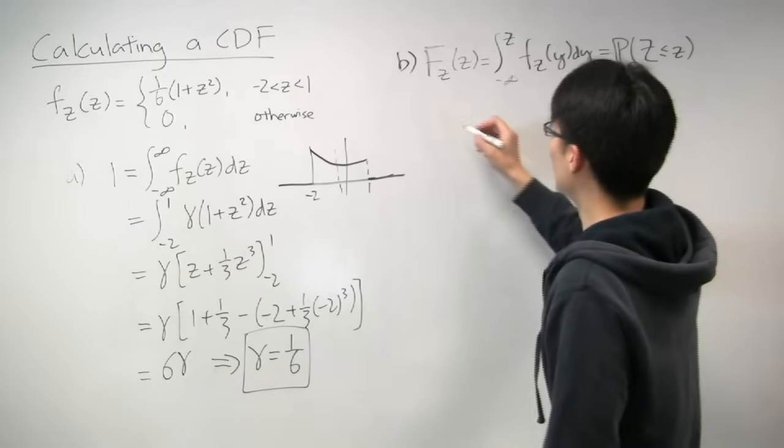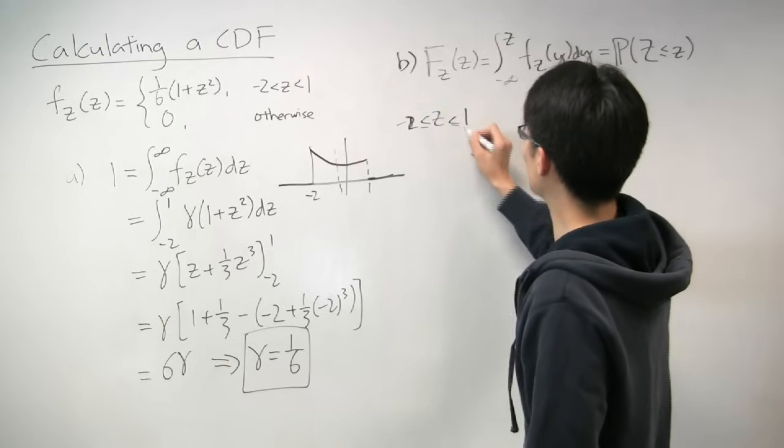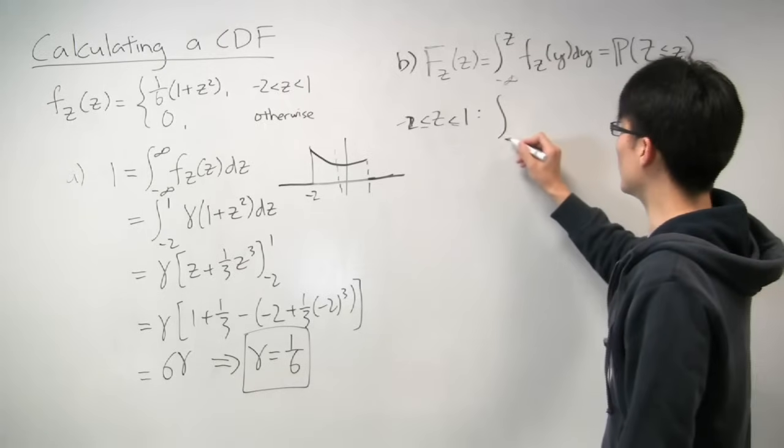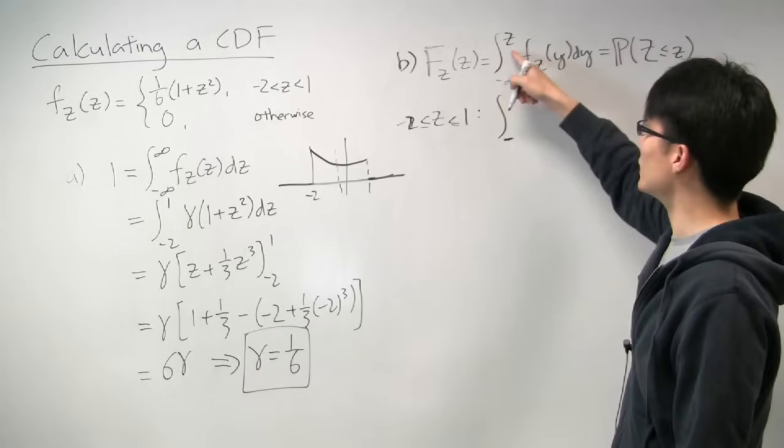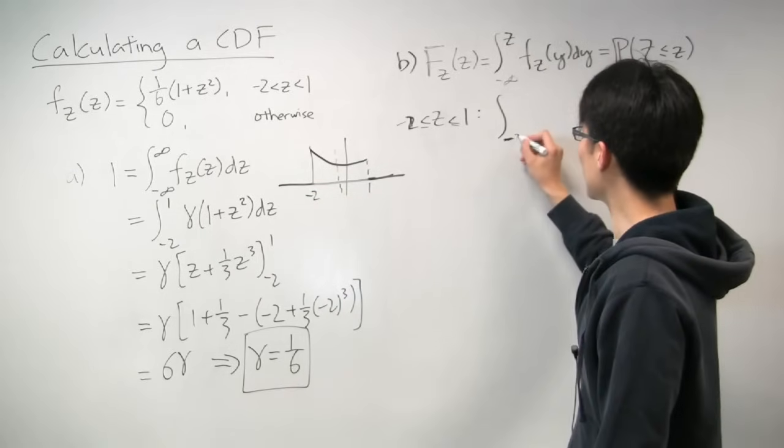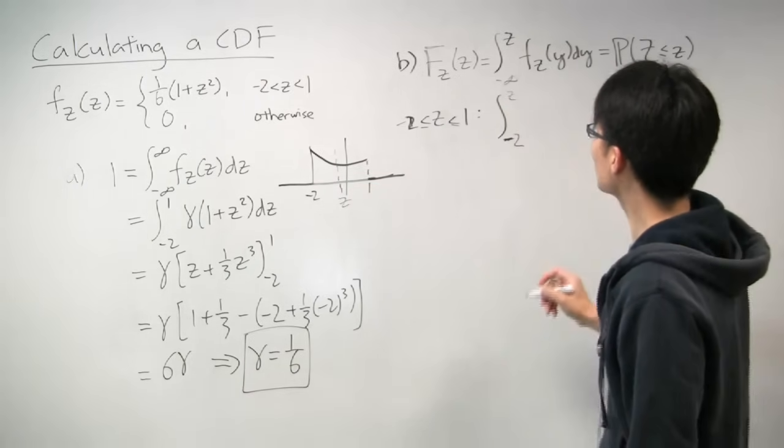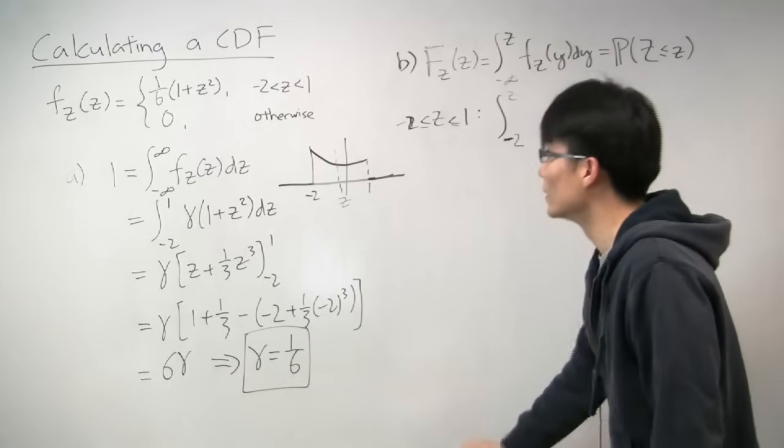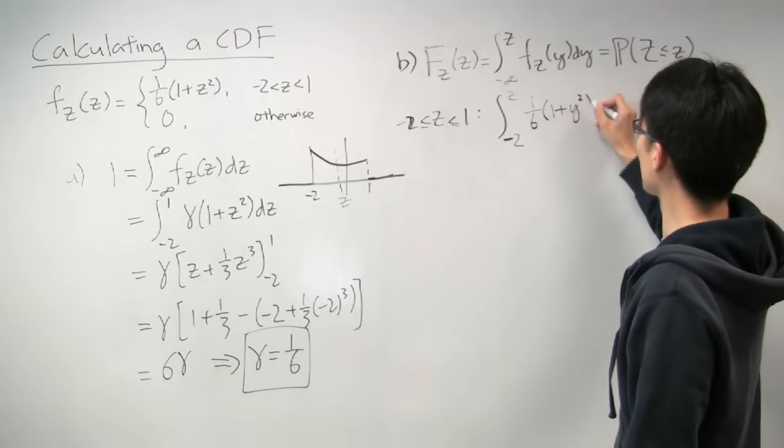So let's do that case first. So the case of z is between negative two and one. So what is the CDF in that case? Well, we're still integrating from the definition is to integrate from negative infinity to z. But we know that everything to the left of negative two, there's no probability density. So we don't need to include that. So we can actually change this lower limit to negative two. And the upper limit is wherever the z is. So that becomes our integral. And the inside is still the PDF. So let's just plug that in. We know that it's 1/6, 1 plus, make this y squared, dy.